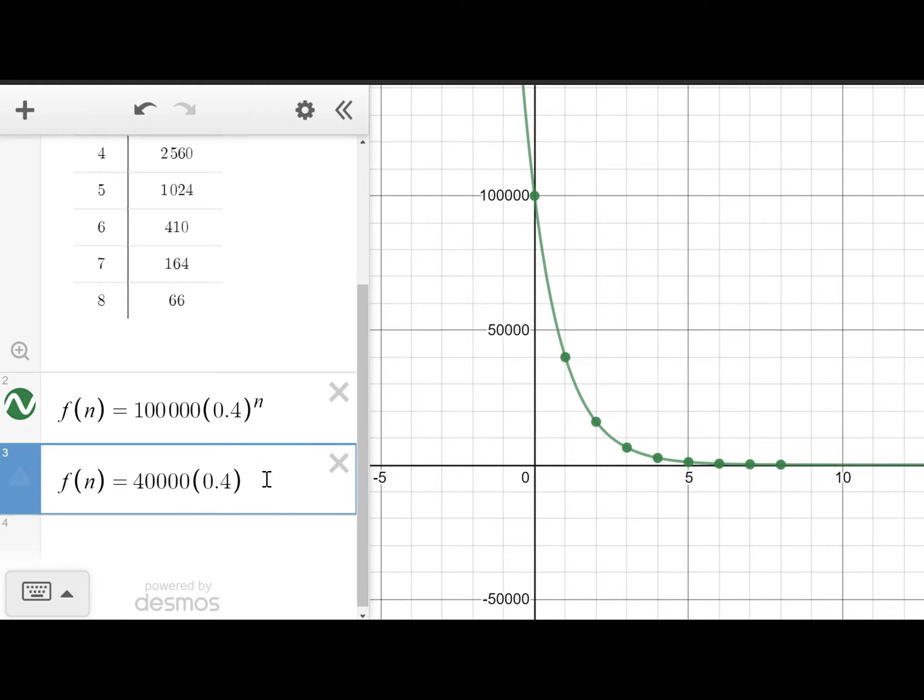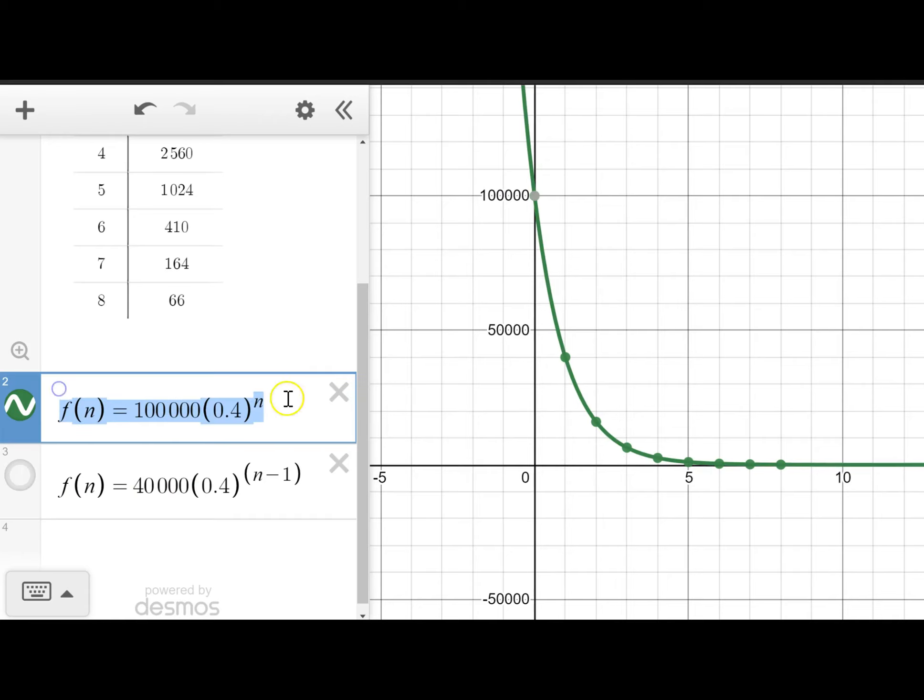Alternatively, if we had considered that we started at day one, I could have done 40,000 × 0.4^(n-1), and that would also give me the same answer. So you can see that those graphs are equivalent. But this, I think, is the most simple representation for this scenario, and you can see how that green graph fits all the green data points, and we're good.